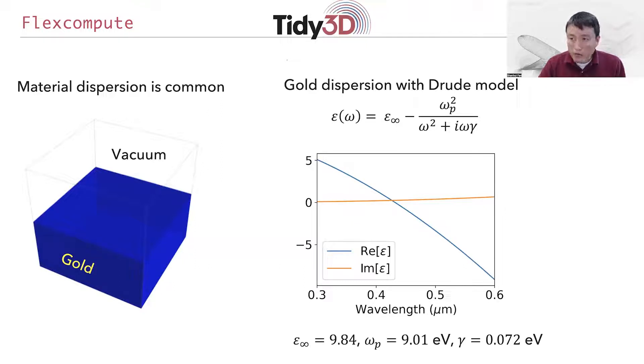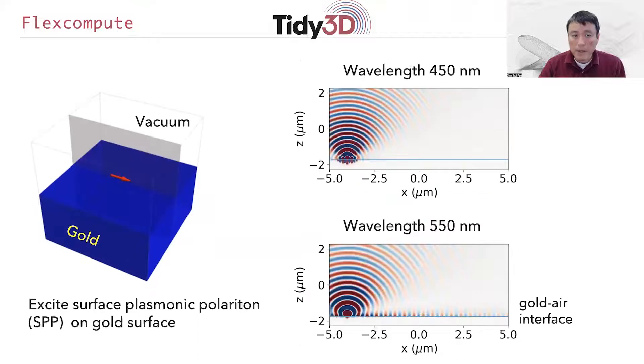It is quite interesting to be able to model the dispersion of these materials because they give rise to interesting new physics that does not occur in non-dispersive material. For example, in the case of gold, this Drude model response gives rise to a strong plasmonic response. As a simple illustration, we do a numerical experiment where we put a dipole source in the immediate vicinity of the interface between gold and vacuum, and we look at the field distribution on a slice as indicated by the gray plane here.